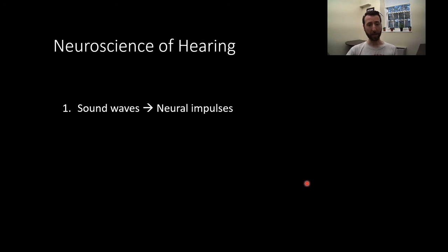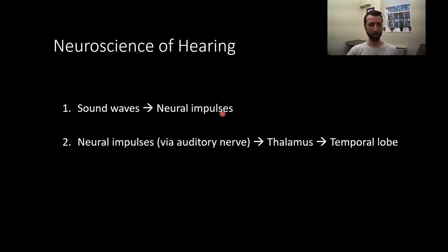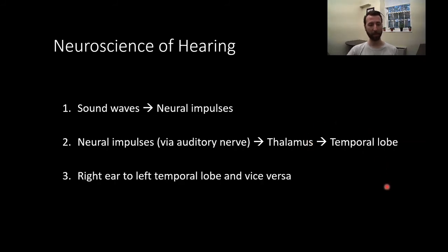Let's talk briefly about the auditory pathway. Those sound waves, through the transduction process we just discussed, become neural impulses. Those impulses are carried via the auditory nerve to the thalamus, and are then projected onto the temporal lobe for further processing. The right ear projects to the left temporal lobe, and the left ear projects to the right temporal lobe.